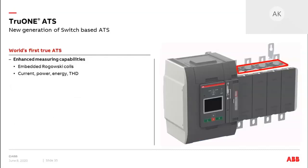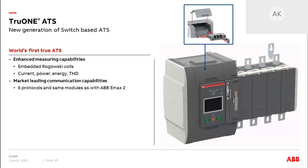TrueOne ATS has embedded Rogowski coils, which means it can measure current, power, energy, and total harmonic distortion — all without any external current transformers and wiring, everything is already inside the unit. TrueOne also has market-leading communication capabilities with six different communication protocols. And since it shares the same software environment with ABB EMAX2, the same communication modules are used on both devices, making it a uniform platform that's easier to adopt when you already know one of these products.